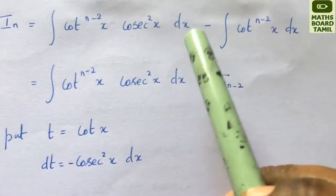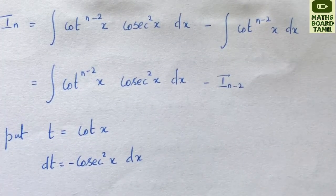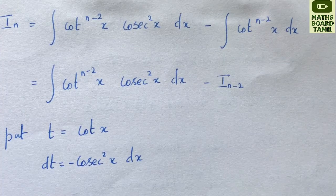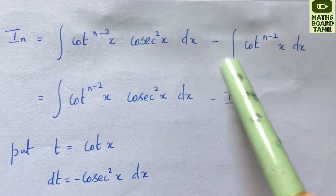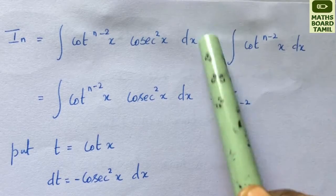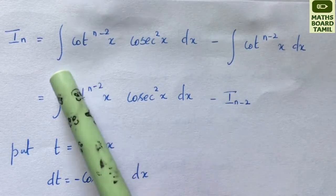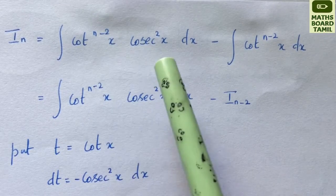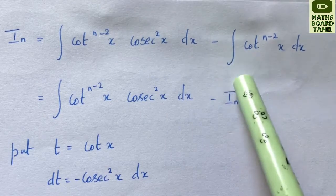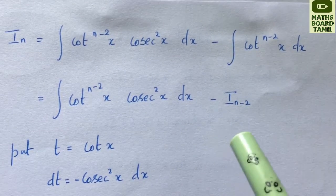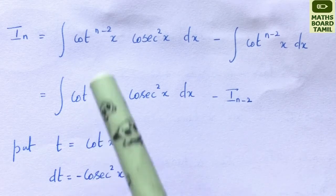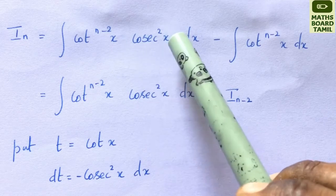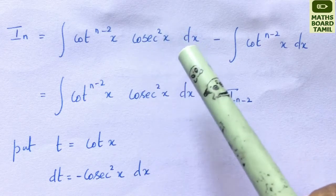We split the integration using the substitution method. So, cos square minus 1, and cos square x is equal to 1. Integration of cos square x into cos square x dx, minus integration of cos square x dx. Next step: n minus c, cos square x into dx.